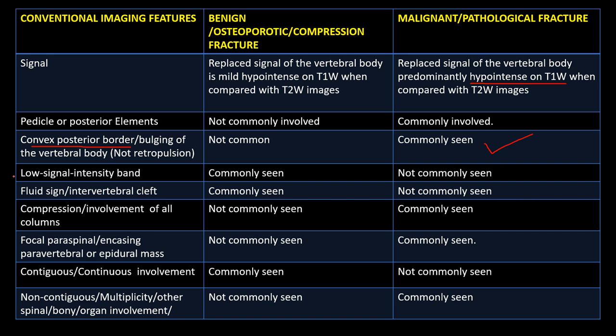Low signal intensity band, fluid sign, and intervertebral clefts are commonly seen in benign fractures, not in malignant. Compression and involvement of all columns are not commonly seen in benign fractures, but are in malignant. Focal paraspinal or encasing paravertebral or epidural masses are not commonly seen in benign fractures but are in malignant. Contiguous or continuous involvement is commonly seen in benign fractures, whereas non-contiguous involvement and multiplicity with other organ involvement — such as lung, liver, and metastatic lymph nodes — are commonly seen in malignant fractures.